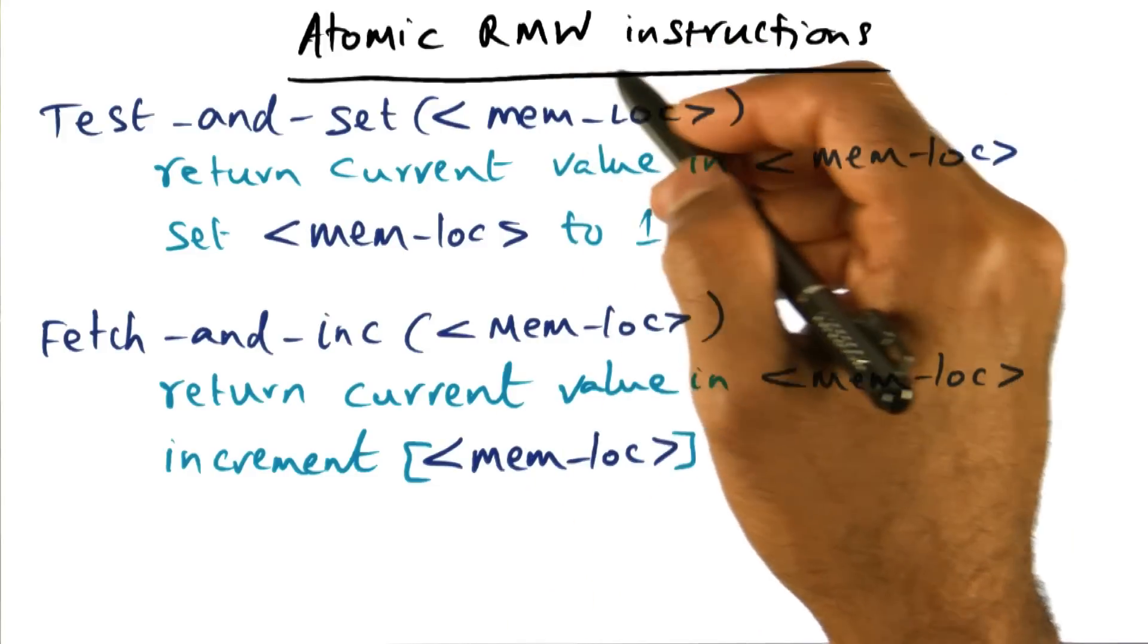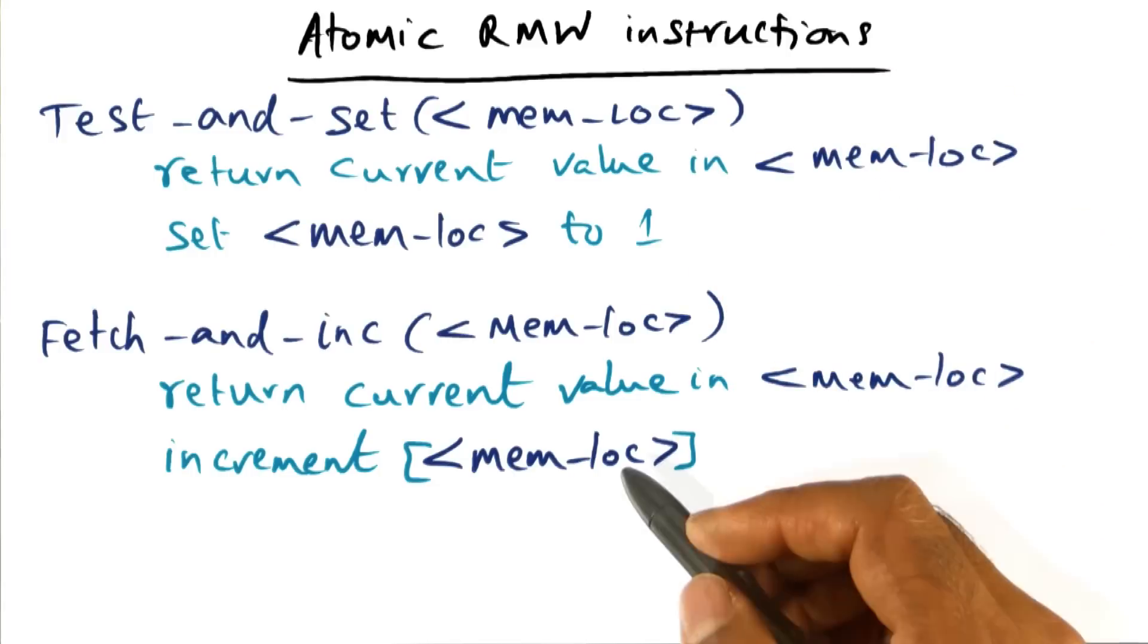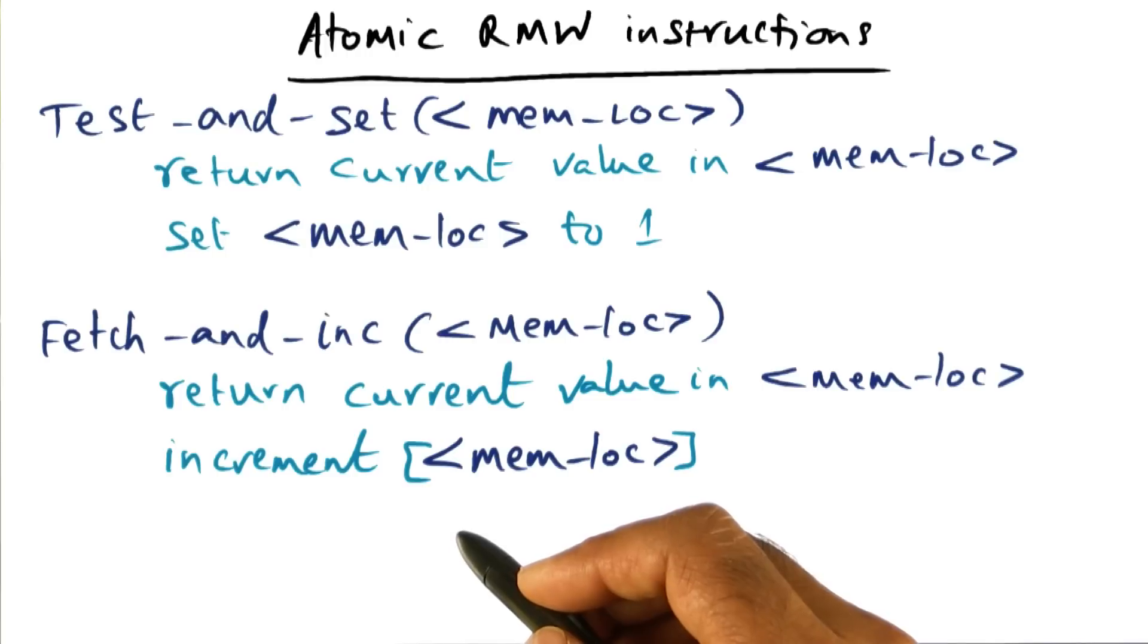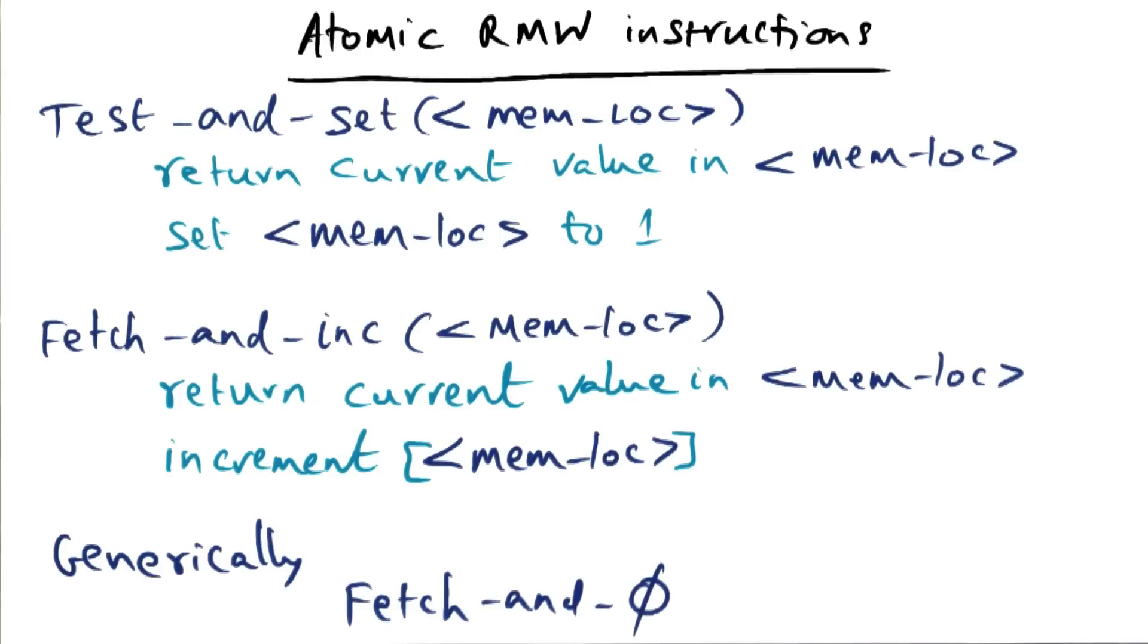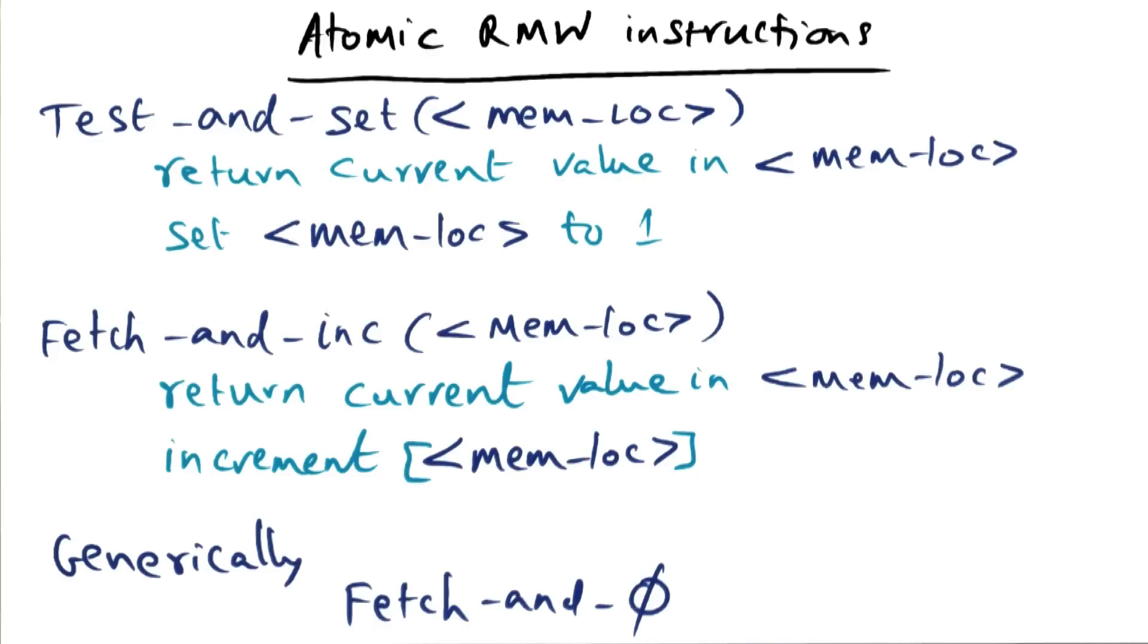As I said before, there have been several flavors of read, modify, write instructions that have been proposed in the literature. And often, generically, these read, modify instructions are called fetch and phi instructions, meaning that it is going to fetch an old value from memory and do some operation on that fetched value and write it back to memory. So for instance, fetch and increment is one flavor of that. There are other flavors like fetch and store, fetch and decrement, compare and swap and so on. And you can read about that in the papers that we've identified for you.